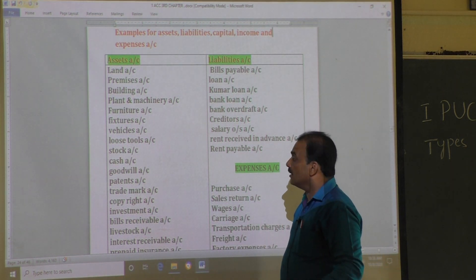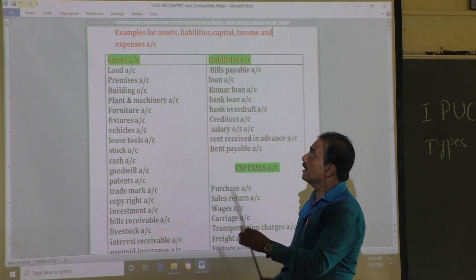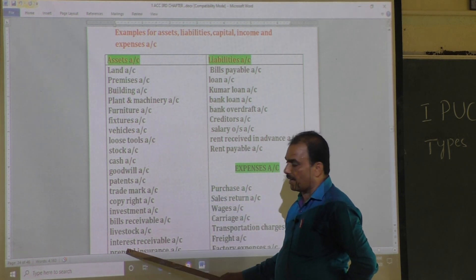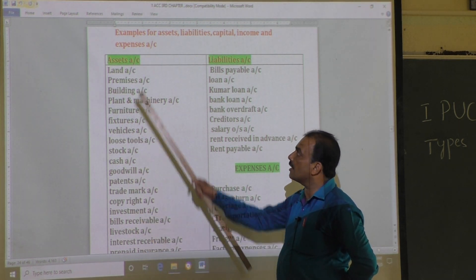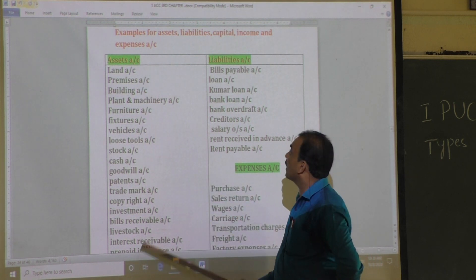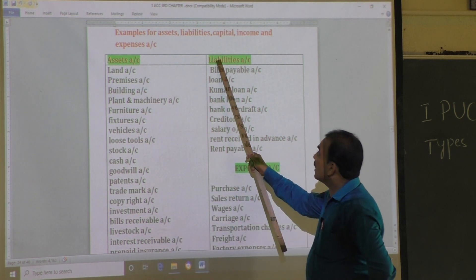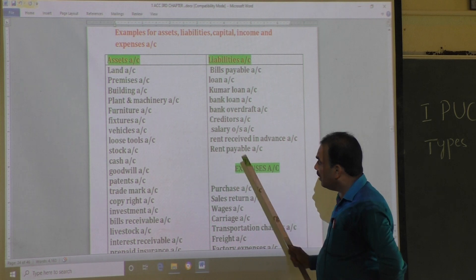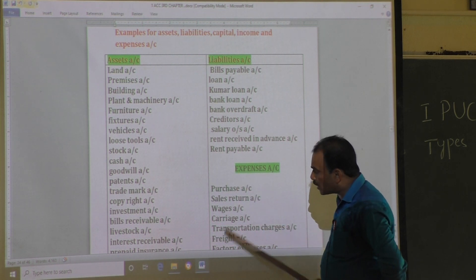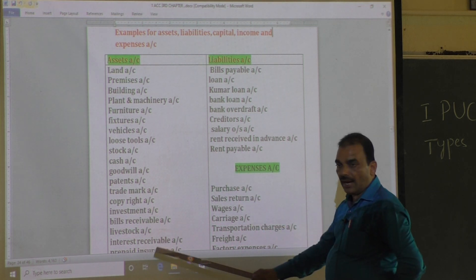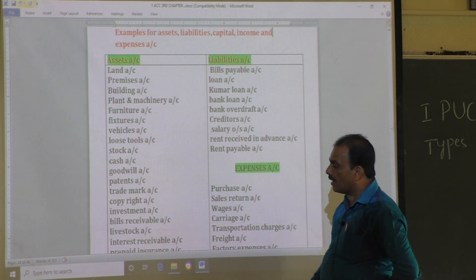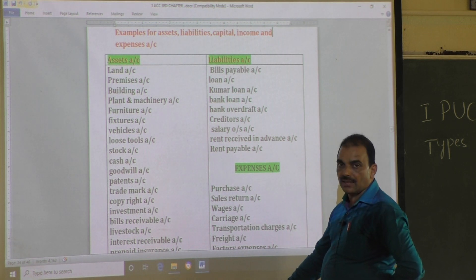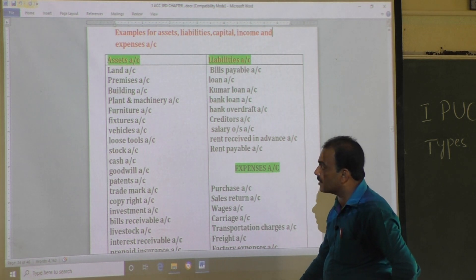Therefore this example is very important. These are the list of asset accounts, and further the liability accounts, expense accounts, and some other examples for other types will continue in the next slide.